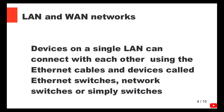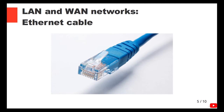Devices on a single LAN can connect with each other using Ethernet cables and devices called switches — Ethernet switches, or simply switches. Ethernet cables are terminated with RJ45 — that plug is called RJ45. There are basically two types of Ethernet cables you may encounter when working at home or in the office: straight-through and crossover. When connecting computer to computer directly, you use crossover. When connecting your computer to the network, you use a straight-through cable.